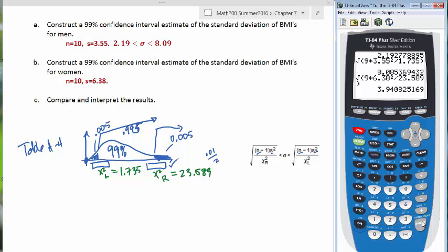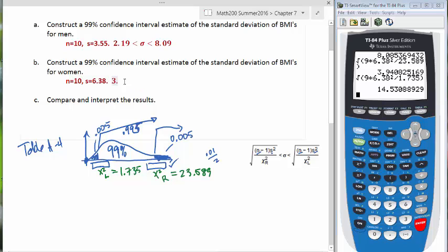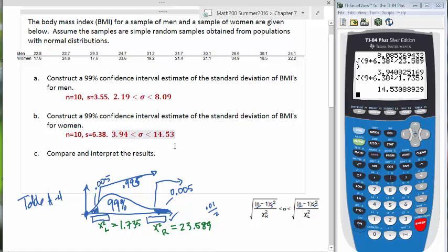We'll run this again, and we'll change the critical value. Instead of the chi-square right, we're going to use chi-square left, which is 1.735. Delete that extra digit. Press enter. And here we have the confidence interval. So, our answer is 3.94 less than sigma and less than 14.53. That's our result so far.